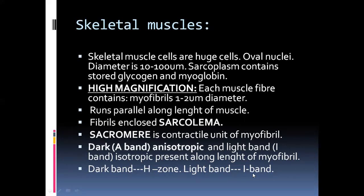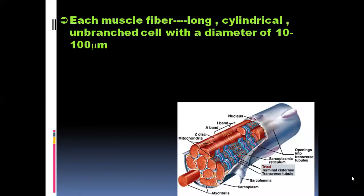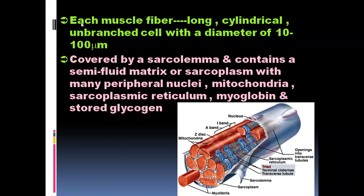Each muscle fiber is a long, cylindrical, unbranched cell covered by a sarcolemma, containing a semi-fluid matrix called the sarcoplasm, which has peripheral nuclei, mitochondria, sarcoplasmic reticulum, myoglobin, and stored glycogen. These are all the materials present inside the muscle. The muscle fiber is a modified cell.